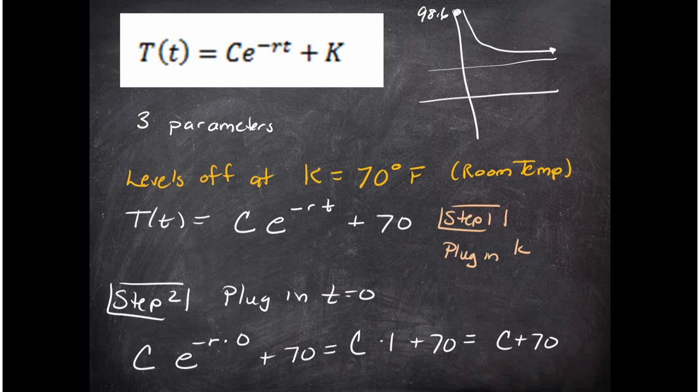Step two: next we're going to dispose of the value for C, and we do this by plugging in time equals zero. This is called a baseline condition or initial condition in an experiment. So in this formula up here, I'm going to plug in t equals zero.